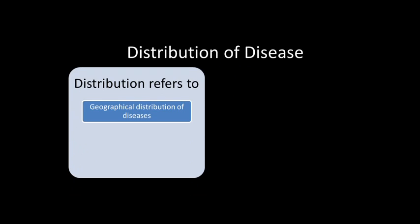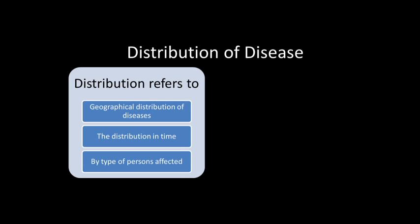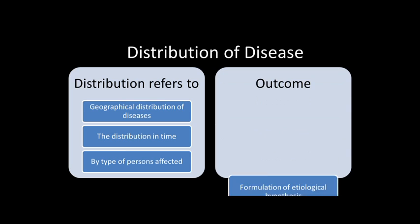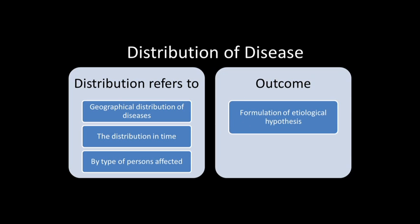Distribution refers to the geographical distribution of diseases, the distribution in time and place and by type of people affected. Time characteristics include annual occurrence, seasonal occurrence and daily or hourly occurrence. Place characteristics include geographical variation, urban-rural differences and location of work sites or schools. Personal characteristics include demographic factors such as age, race, sex, marital status and socio-economic status, as well as behaviors. The outcome of the study is to formulate etiological hypotheses and characterization of health events in terms of time, place and person, described by descriptive epidemiology.